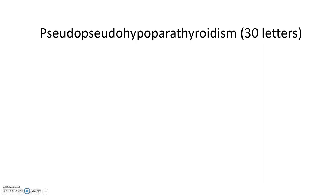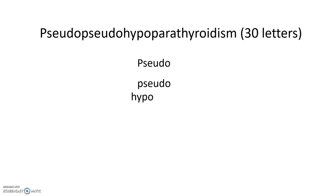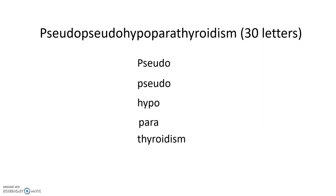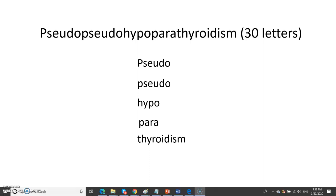Let us split the word into 5 parts. The 1st part is pseudo, 2nd pseudo, 3rd hypo, 4th para, 5th thyroidism. If you combine all the words together, it will become the 4th longest word in English: pseudo-pseudo-hypoparathyroidism.